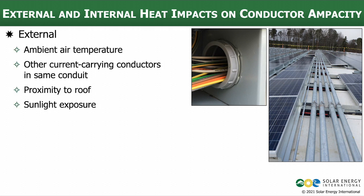External sources include things like the ambient air temperature. Conductors are rated at a certain temperature, and if they are in an environment that's different than that, we're going to have to adjust their ampacity accordingly. Another form of external heat would be other current-carrying conductors in the same conduit. When a conductor carries current it's going to give off heat, and the more conductors we have in a conduit, the less air there is to dissipate that heat.